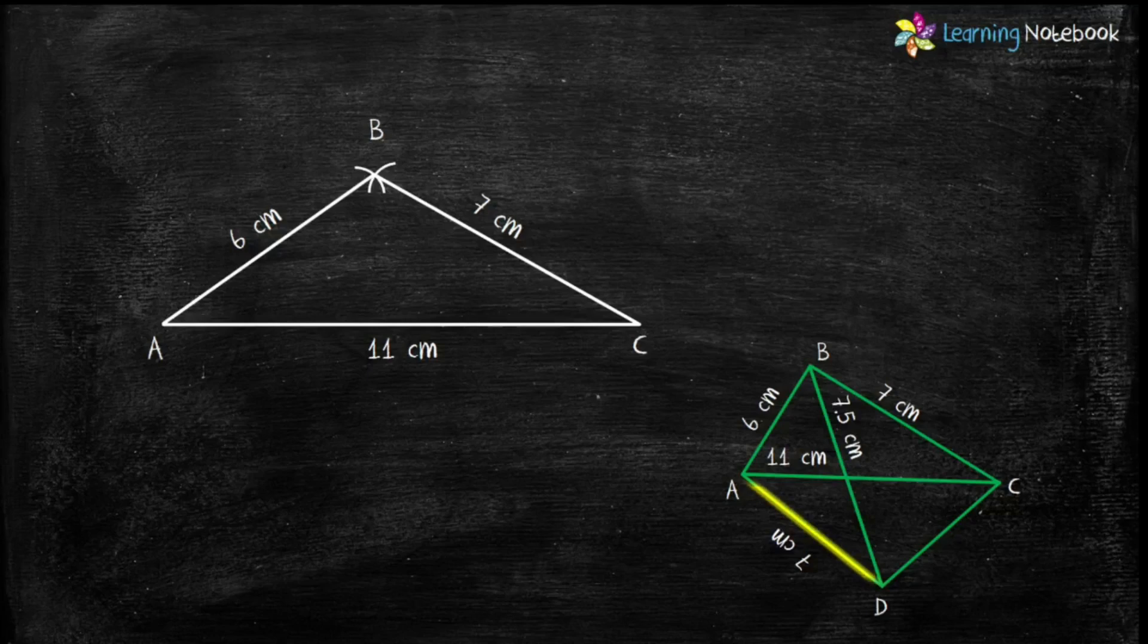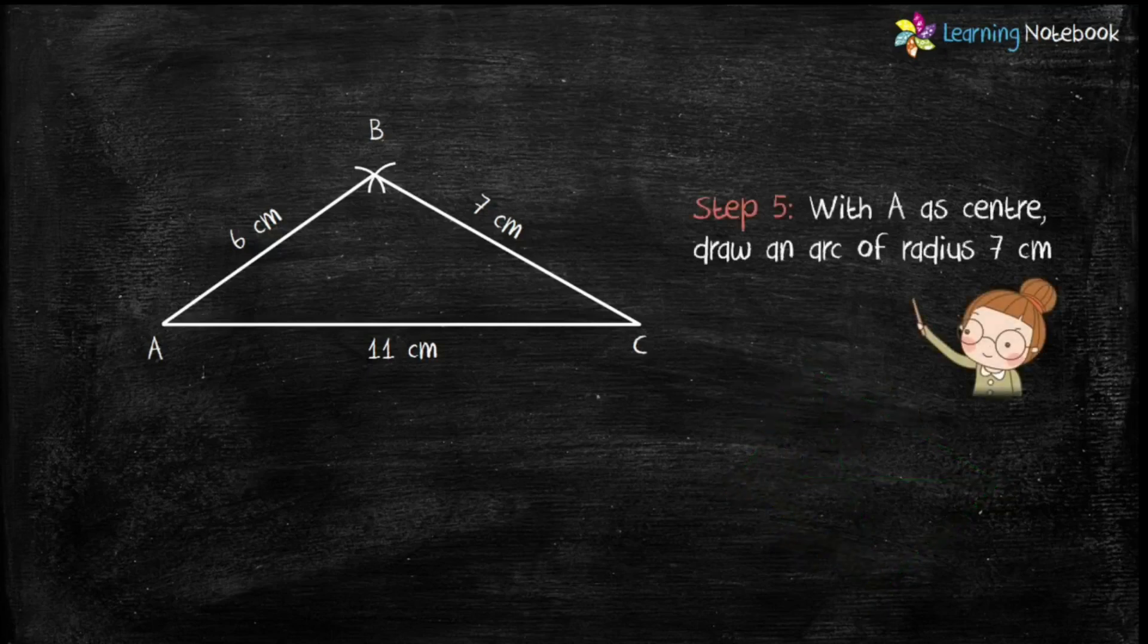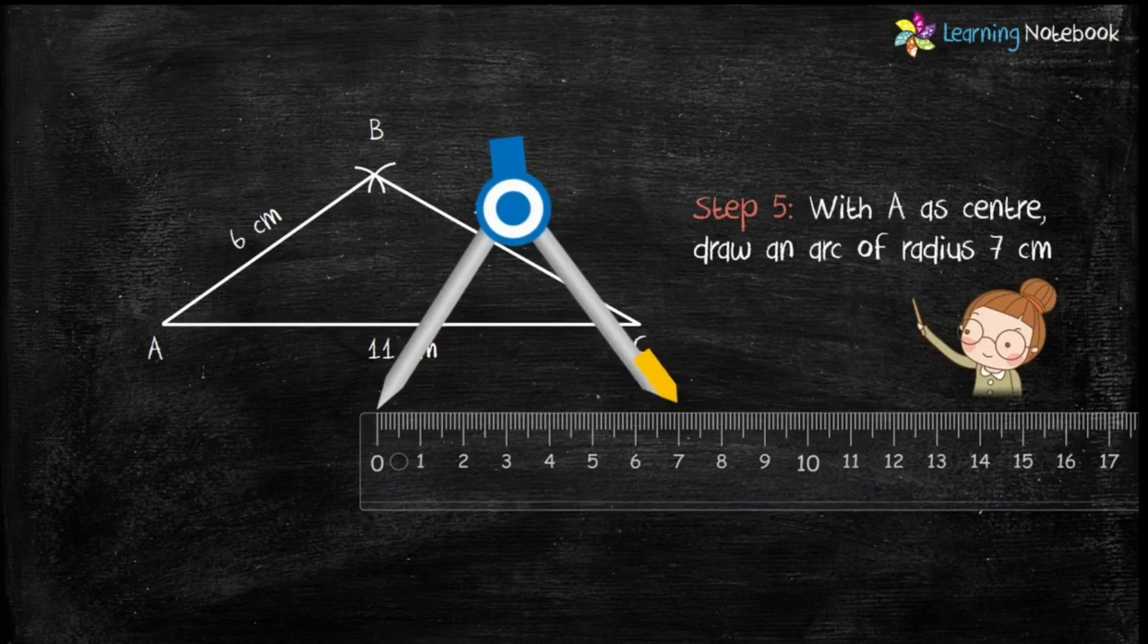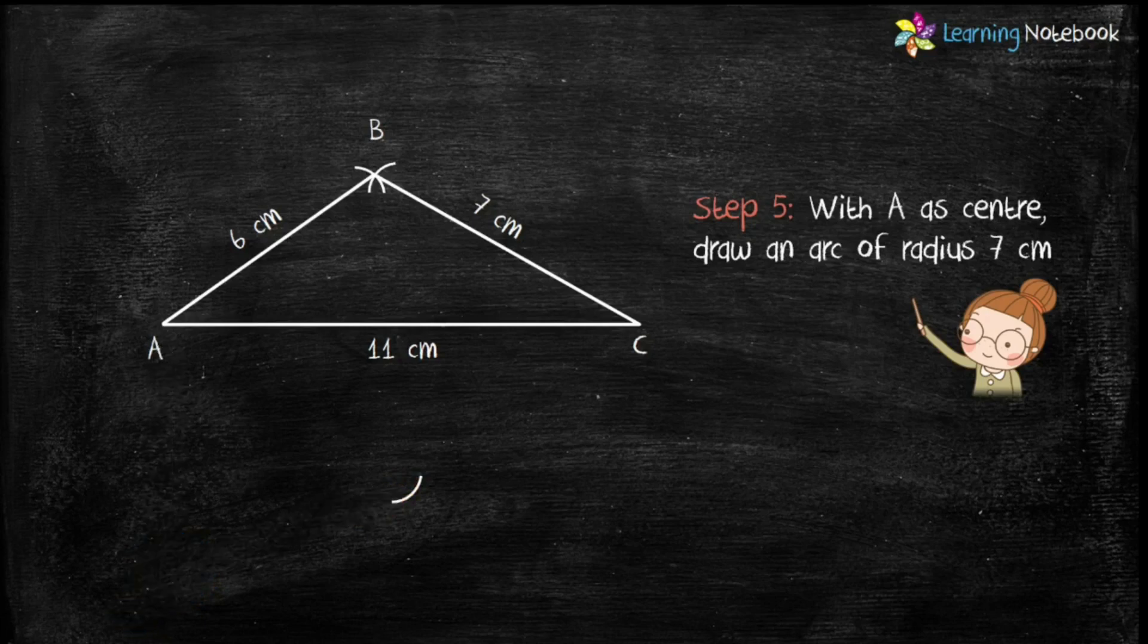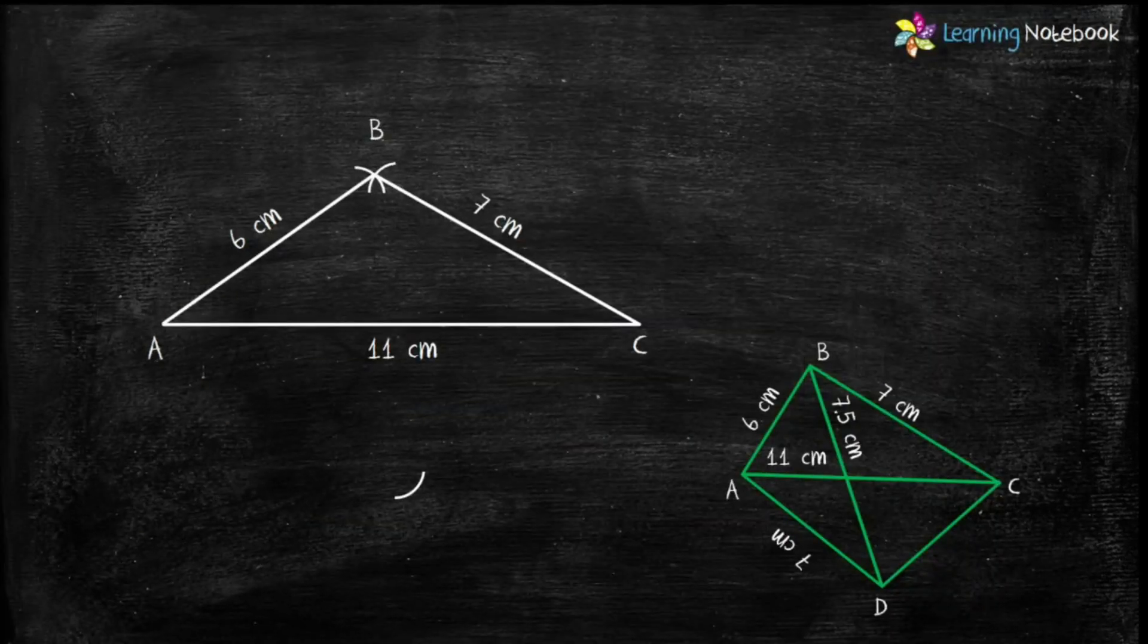Now students, let's construct AD which is given as 7 cm. So for step 5, open the compass with radius 7 cm and with A as center draw an arc. Now look at the rough sketch.